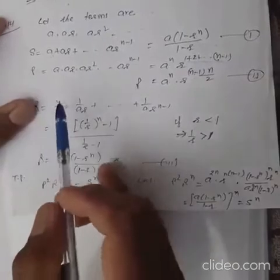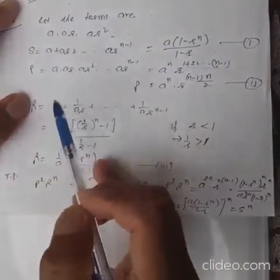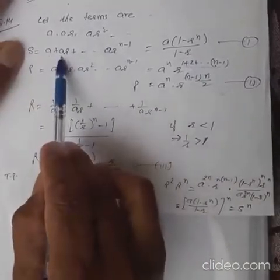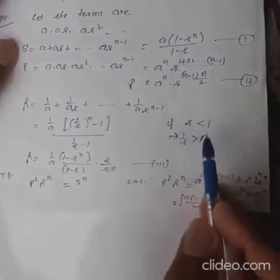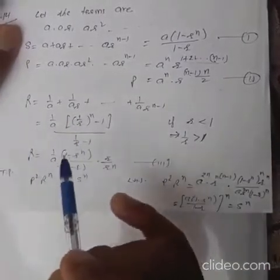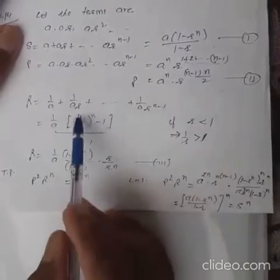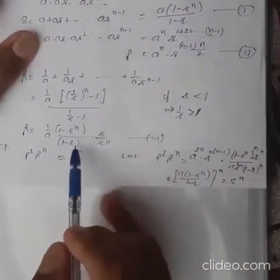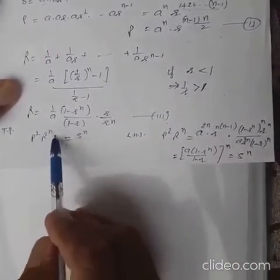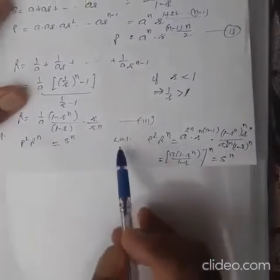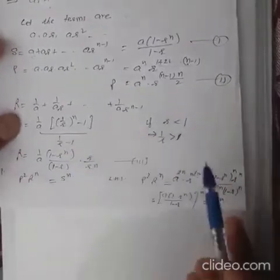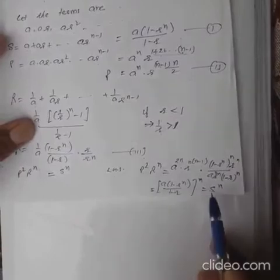R is the sum of reciprocals of the terms: 1 upon A plus 1 upon AR and so on for N terms. Since R is less than 1, the common ratio 1 upon R is greater than 1, so the formula for ratio greater than 1 is used. After simplification, R equals the corresponding expression. We want to prove P squared into R raised to N equals S raised to N. Substituting the values of P and R and simplifying, you will find it equals S raised to the power N.